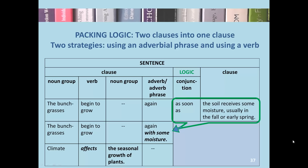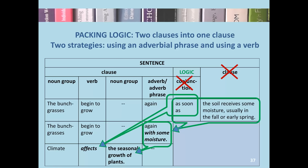Going back to the bunch grasses example, we've seen how a conjunction and clause can be shifted to an adverb phrase, creating what we call clause-internal reasoning — in this case, with the preposition. Another shift from two clauses and a conjunction to a single clause is to use a causal verb or a verb with logical meaning, such as 'affects.' So 'climate affects the seasonal growth of plants' is an abstract version of the bunch grasses sentence. We have two strategies for packing the logic of conjunctions: one with an adverb phrase, and the other with a causal verb.